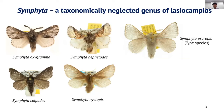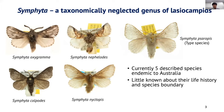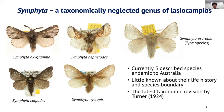Among the 12 genera of Lassiocampidae moths, Simphita is an interesting one. Currently, there are only five described species in Australia. Unfortunately, we know very little about them. For example, we know the host plant of some species and know where to find them based on collection records, but we don't know anything about the life history and species biology. Furthermore, the latest taxonomic revision of this genus was done by Turner about 100 years ago, in 1924, and it is surprising that within these 100 years, no one has been interested in looking at them.